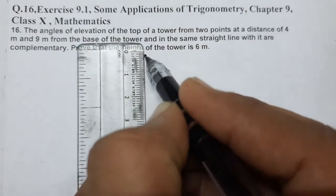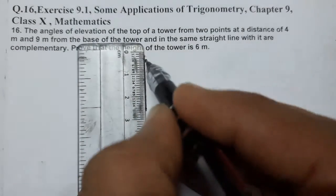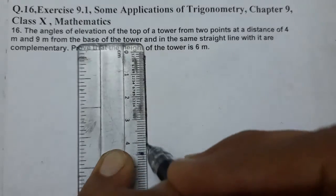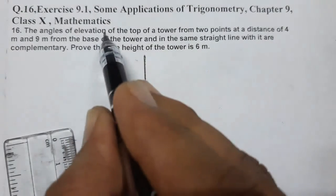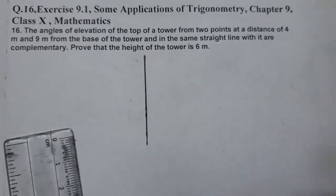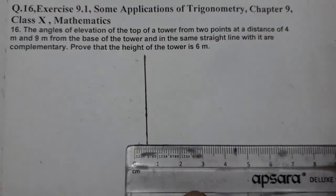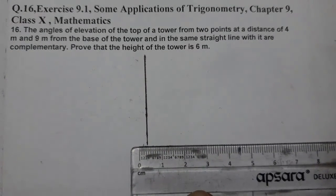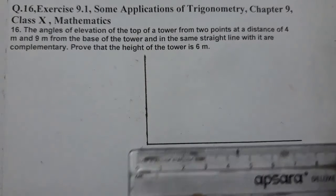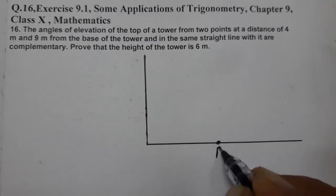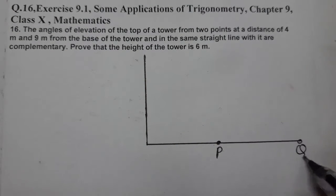Let's understand the question. First, angle of elevation of top of tower - we'll draw the tower. Then angle of elevation from two points - let's take one point P and one point Q.